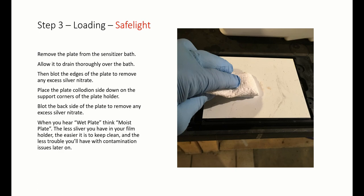When you hear wet plate, think moist plate. The less silver you have on your film holder, the easier it is to clean and the less trouble you'll have with contamination issues later on. If you're using a modified film holder, place a pressure spring between the plate and the dark slide, then close the dark slide completely.